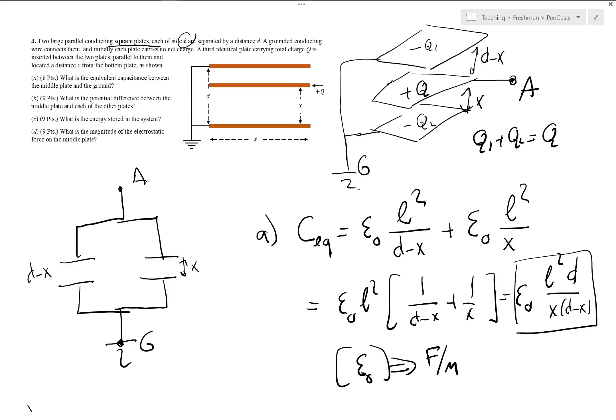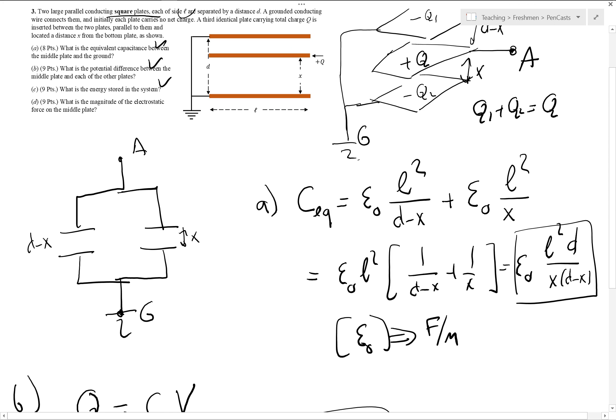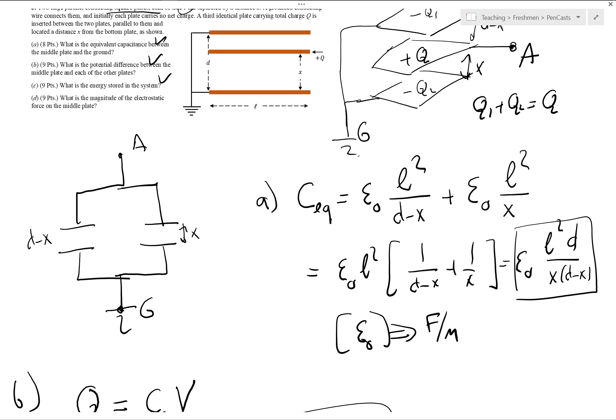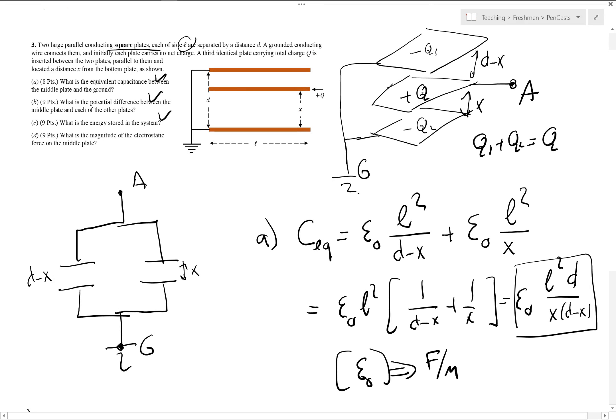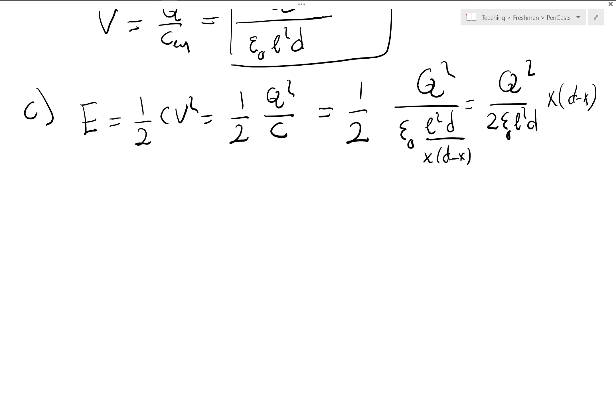How about the magnitude of the electrostatic force in the middle plate? Now, why is there a force in the middle plate? Because there are plus charges here, there are minus charges up and down. So both of them are attracting, right? But what's the easiest way to find the force?